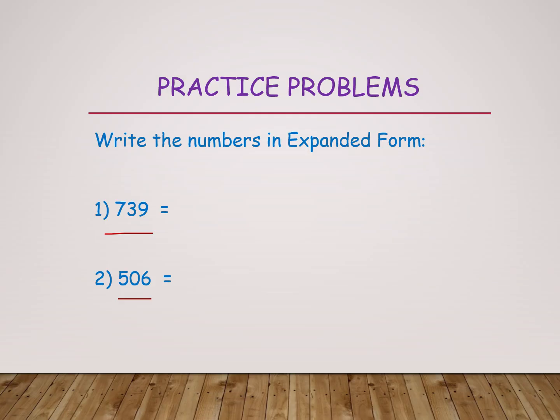Okay kids, is it done? I will tell the answer. First 739. How can you write? 7 in 100s, 3 in 10s, 9 in 1s place. 7 into 100 is 700, 3 into 10 is 30, 9 into 1 is 9. Shall we see the answer? 700 plus 30 plus 9, it becomes 739.